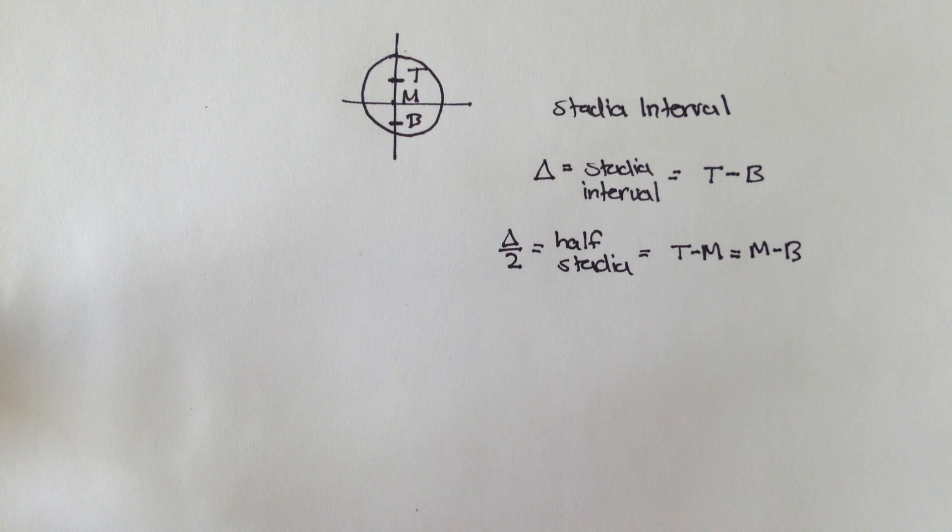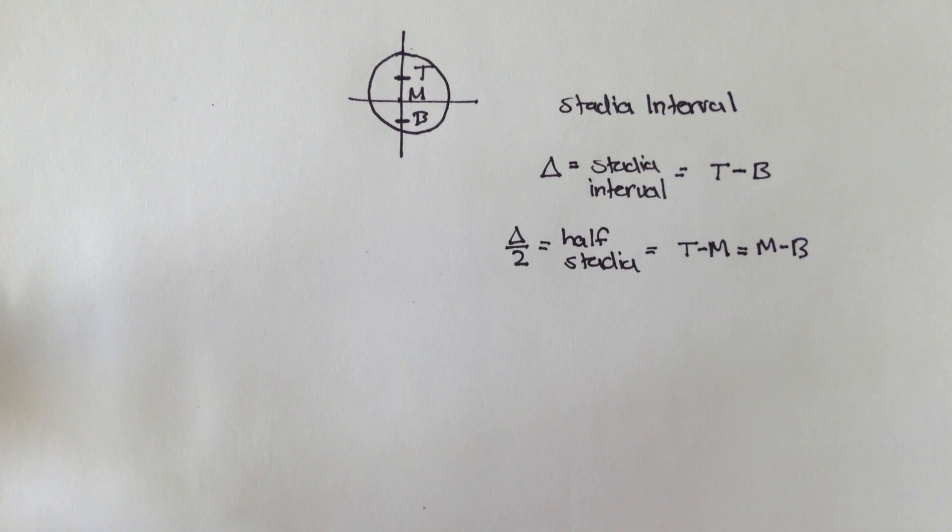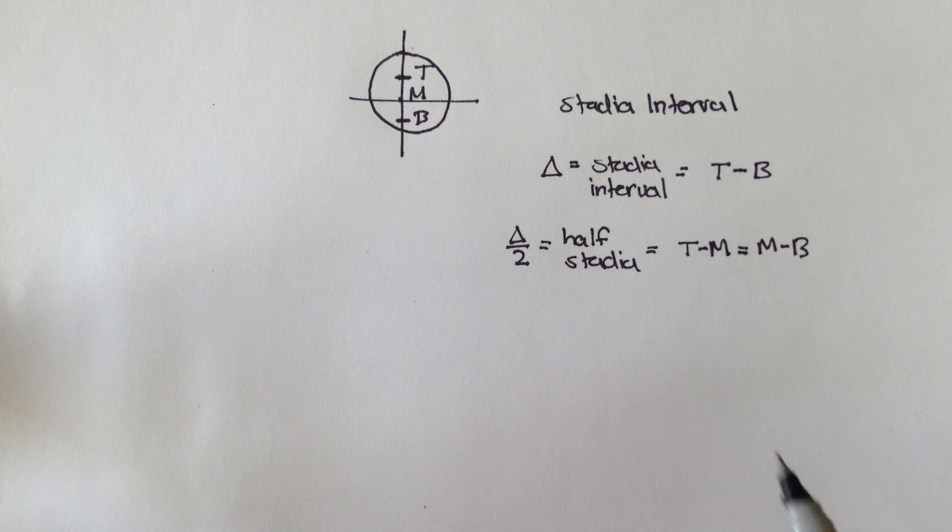So, why is half stadia and stadia so important? Well, when you're taking measurements in three-wire leveling, you want to make sure that your half stadias, your top minus middle and your middle minus bottom measurements, are roughly the same. And by roughly the same, I mean to at least the 0.001 accuracy.